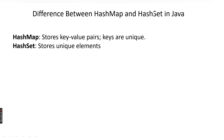So that is the difference between HashMap and HashSet. HashMap is a class that implements the Map interface and stores key-value pairs where keys must be unique but values can be duplicated. HashSet implements the Set interface, stores only unique values, and does not store keys. We will see another topic in the next video. Thank you for watching.